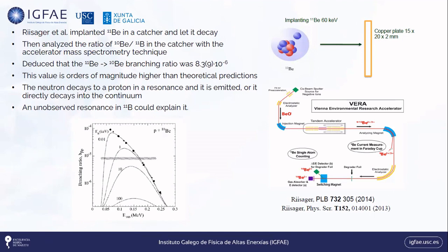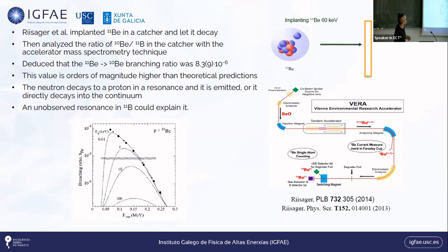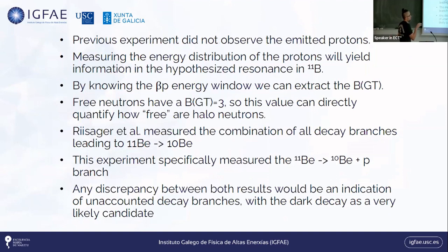There was a pioneering experiment by Raabe and collaborators who implanted Beryllium-11 into a copper plate. Because the residue for this decay would be Beryllium-10, with a million-year lifetime, they brought the sample to AMS and extracted the total amount of Be-10. They obtained a branching ratio of 8.3×10⁻⁶. This is a huge branching ratio compared to theoretical predictions, which might be explained by a resonance in Boron-11.